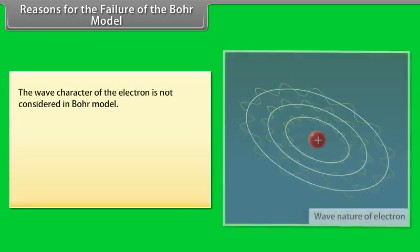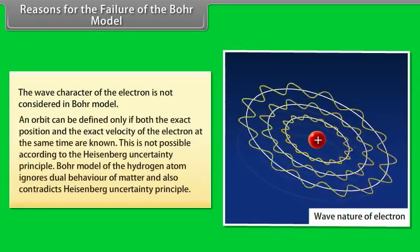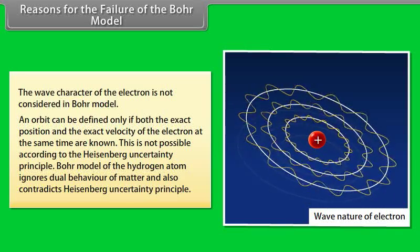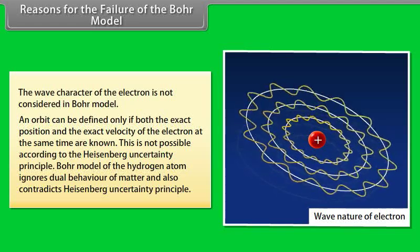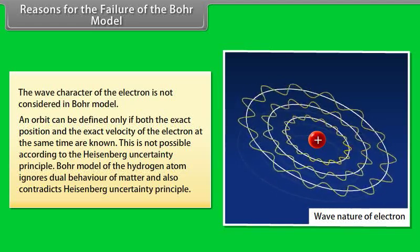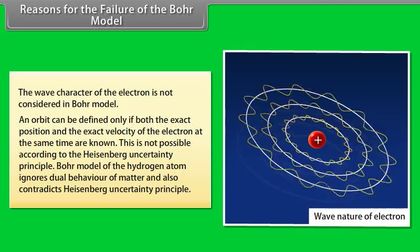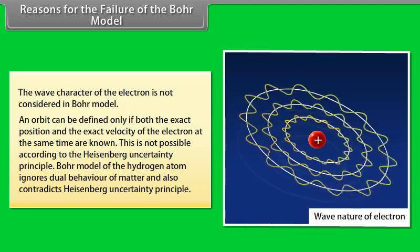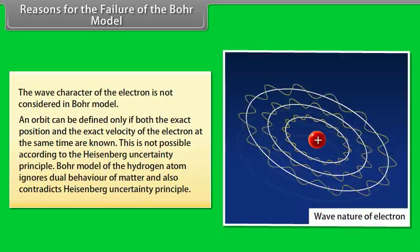Reasons for the failure of the Bohr model: The wave character of the electron is not considered in the Bohr model. An orbit can be defined only if both the exact position and exact velocity of the electron at the same time are known, which is not possible according to the Heisenberg Uncertainty Principle. Thus, the Bohr model of the hydrogen atom ignores dual behavior of matter and contradicts the Heisenberg Uncertainty Principle.